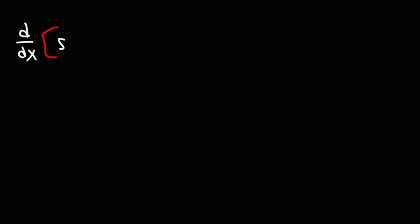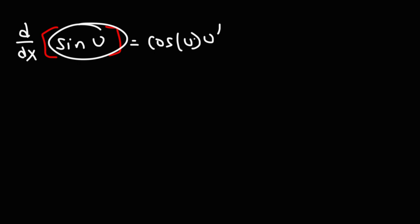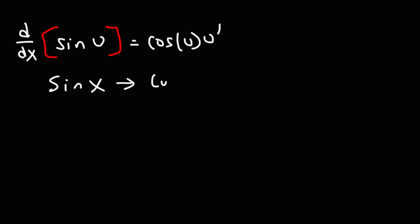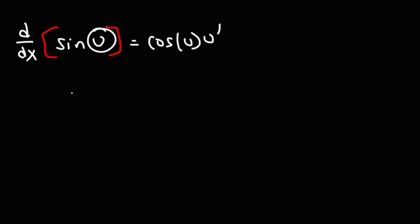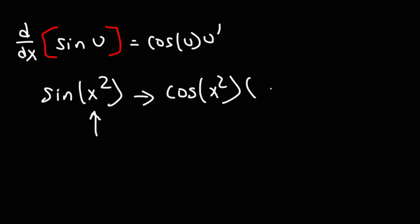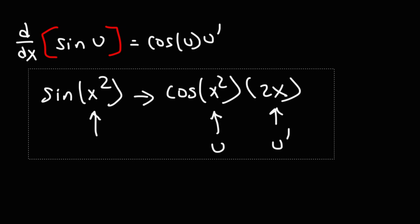Now let's focus on trig functions. The derivative of sin of u is going to be cos u times u prime. If you just have sin x, the derivative of sin x is simply cos x — you can think of it as cos x and the derivative of x is 1. But let's say u was x squared. If you want to find the derivative of sin(x squared), it's going to be cos(x squared) times the derivative of x squared, which will be 2x. This is the u part and this is the u prime part. This reminds you that you'll need to employ the chain rule if you have something other than x as the angle.